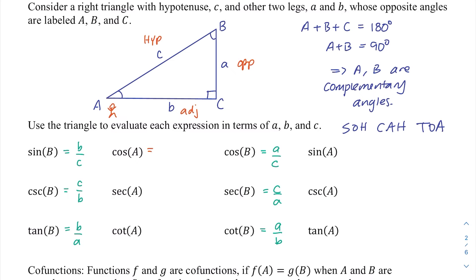Cosine of angle A is adjacent over hypotenuse, so B over C. Secant of A is just the reciprocal of cosine, so C over B. Cotan of A is adjacent over opposite, so B over A. Starting with sine of A, I have opposite over hypotenuse. Cosecant of A is just the reciprocal, so C over A. And tangent of A is opposite over adjacent, so A over B.